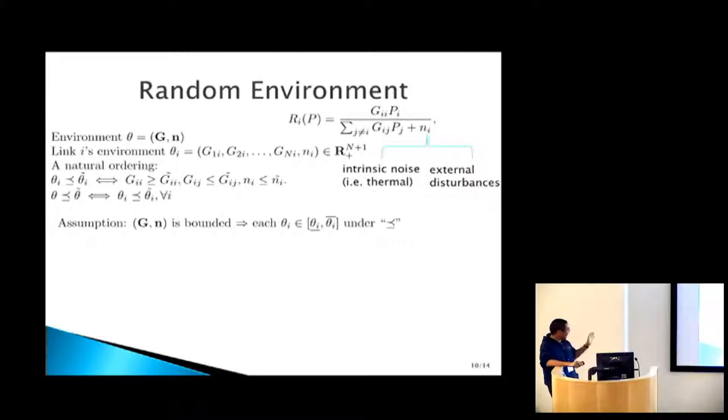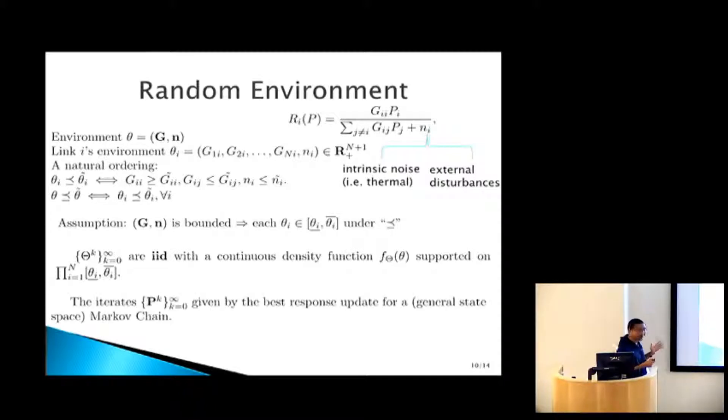We're assuming that the GN is bounded, which is natural because everything is bounded. By this discussion, that just means the environment is also bounded because you can take the max and the respective min. Here, we're going to take a simple model where the environment is an IID random process with a density function on some hyper rectangle. Once you do that, you realize that the power iterates in the best response update form a Markov chain.